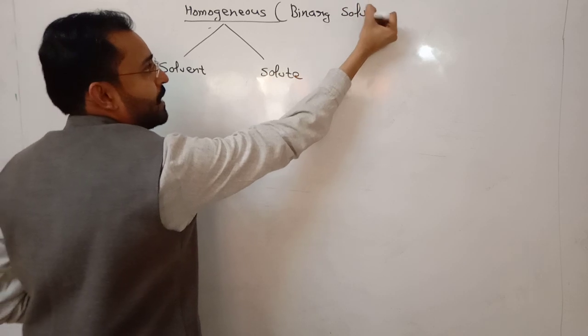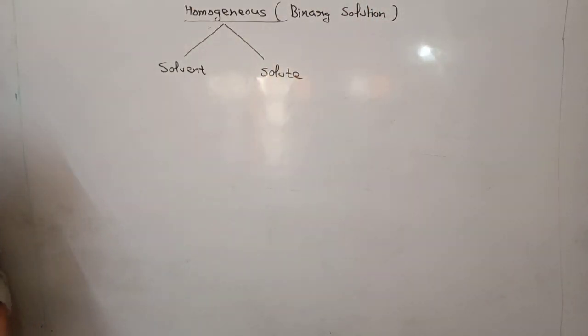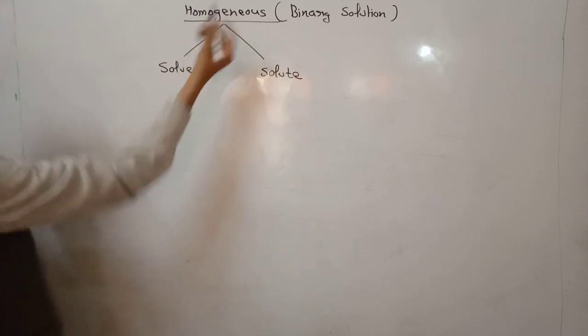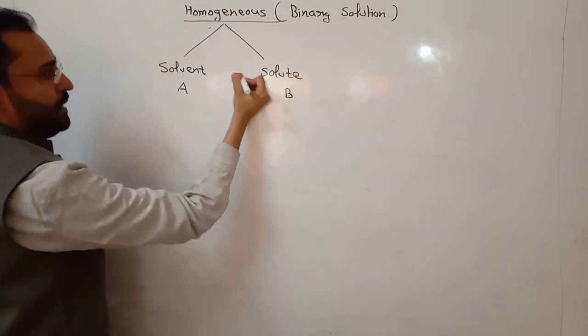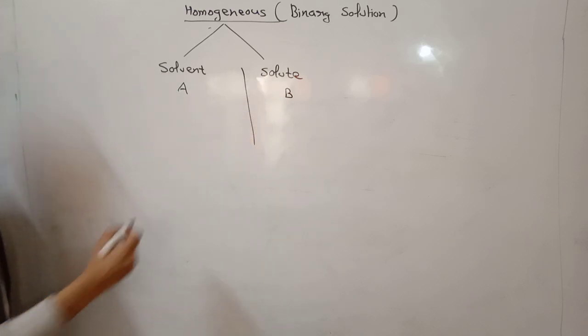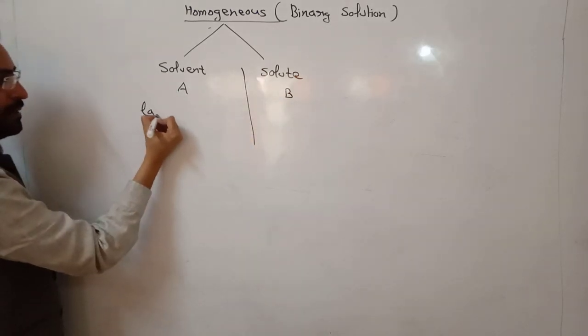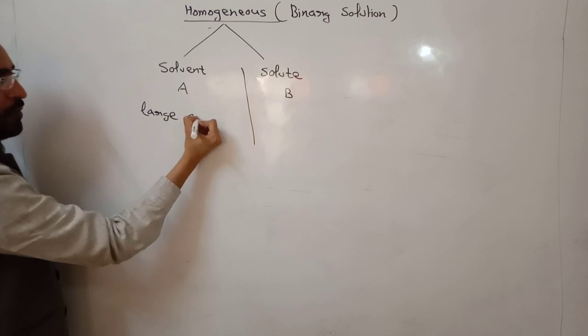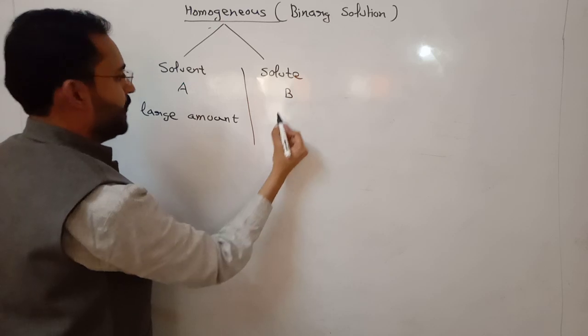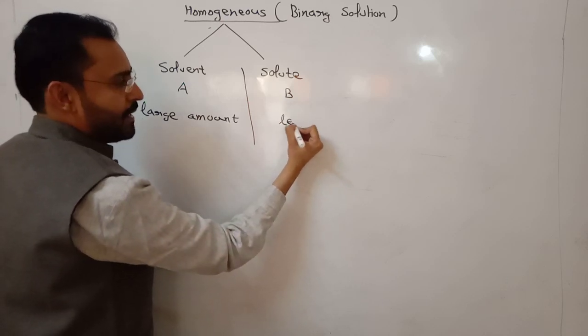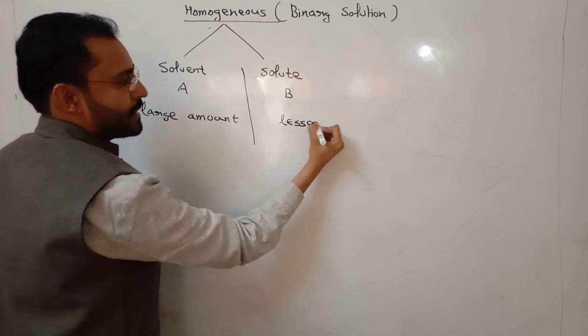Binary solution is composed of two components only, component A, component B. A is a solvent which is present in large amount and component B is a solute which is present in lesser amount.